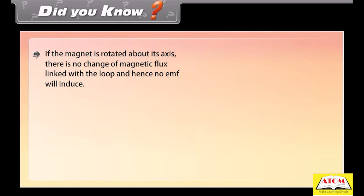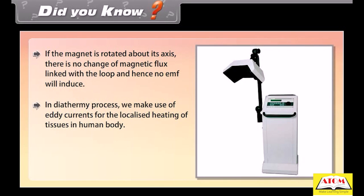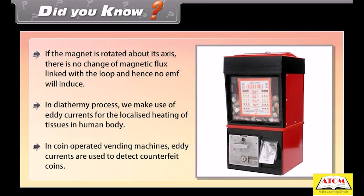Did you know? If the magnet is rotated about its own axis, there is no change of magnetic flux linked with the loop and hence no EMF will be induced. In the diathermy process, eddy currents are used for localized heating of tissues in the human body. In coin-operated vending machines, eddy currents are used to detect counterfeit coins.